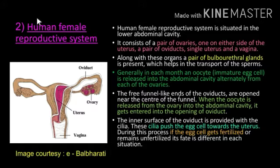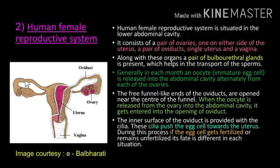In an earlier session we studied the male reproductive system, and now we are going to study the human female reproductive system. The human female reproductive system is situated in the lower abdominal cavity. It consists of a pair of ovaries, one on either side of the uterus, a pair of oviducts arising from the ovaries, a single uterus, and a vagina.